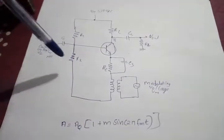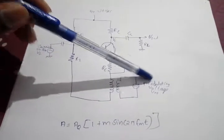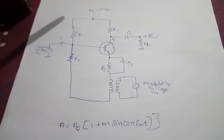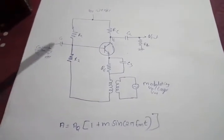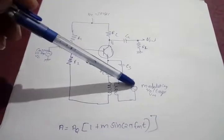The gain of the amplifier is dependent on the modulating signal voltage. The gain of the amplifier will vary with the frequency of the modulating signal.